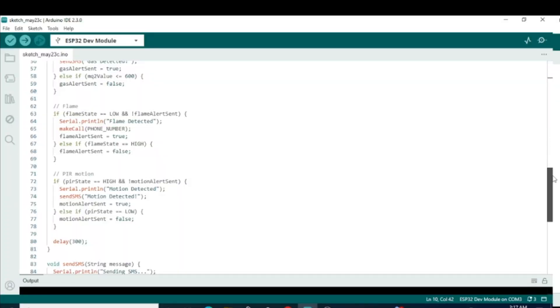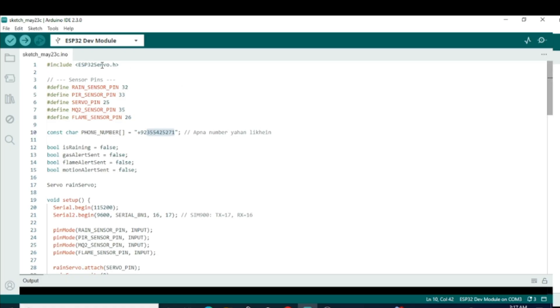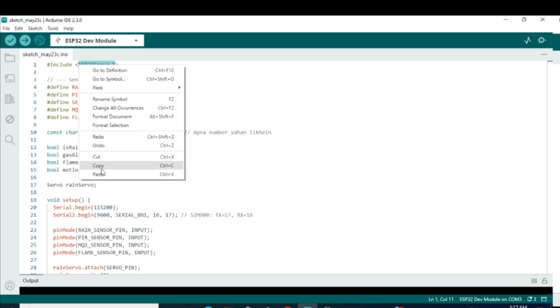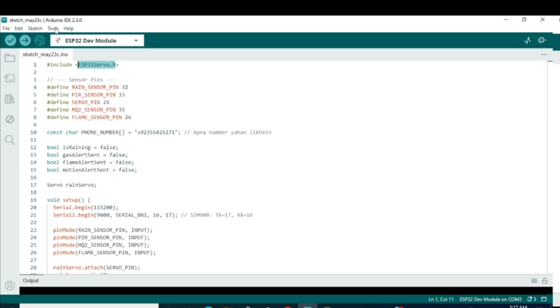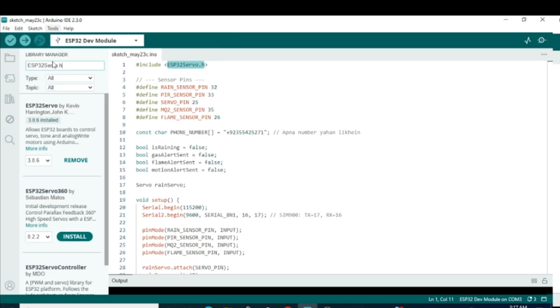First, at the top of your code, you will see ESP32 Servo H. Copy this line, then go to Tools and click on Manage Libraries. In the search bar, paste the line. A list will appear. If you haven't installed this library before, you will see an Install button. Click to install it. Since I've already installed it, it will show Remove Now.